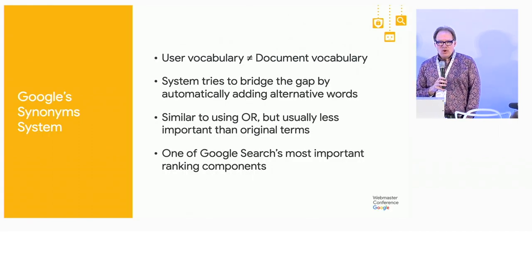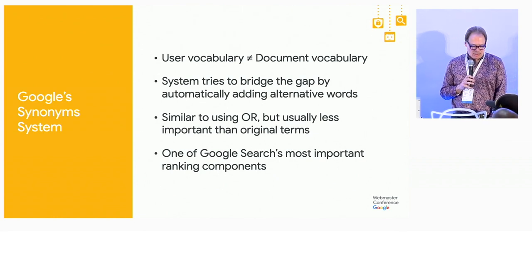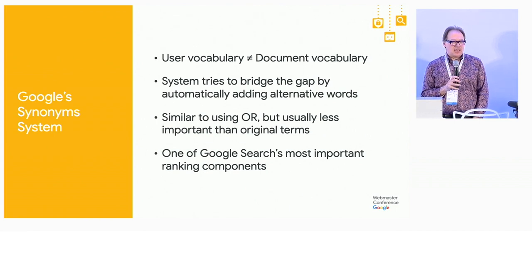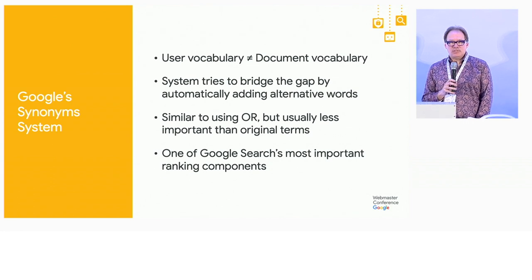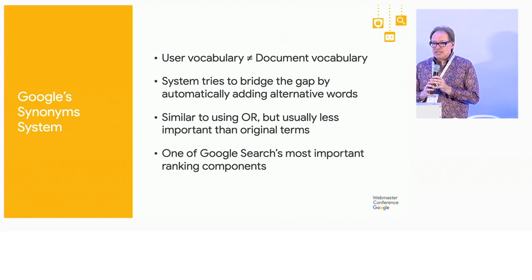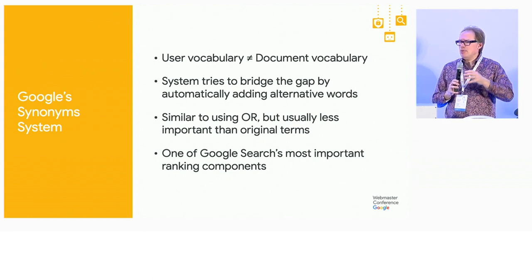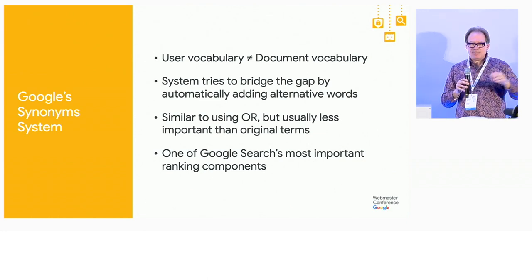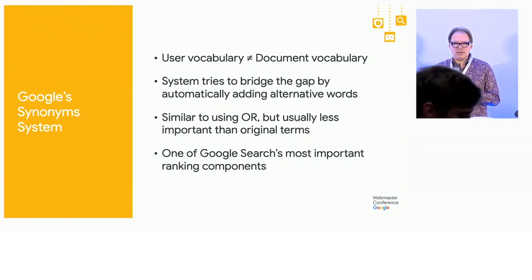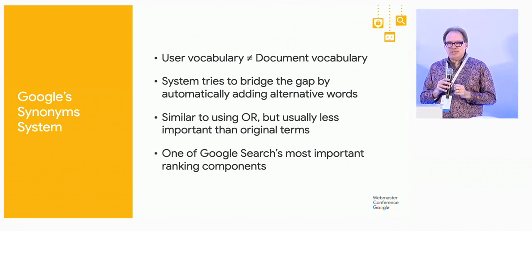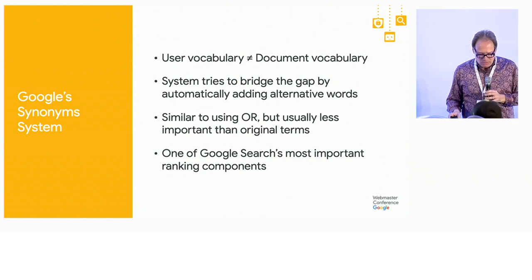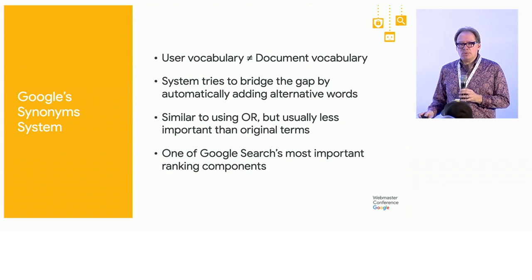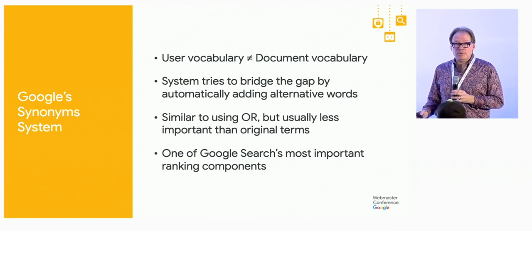What is our synonym system? It's there to bridge a gap between user vocabulary and document vocabulary — when we see a query it's often written in different language than documents use, and we're trying to match those things. It works a lot like adding a bunch of OR terms. Back in the Alta Vista days in the late 90s you really needed to use OR a lot in your searches, and that's effectively what our synonym system does.